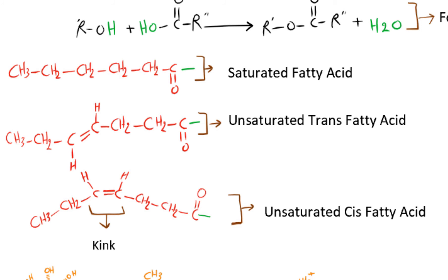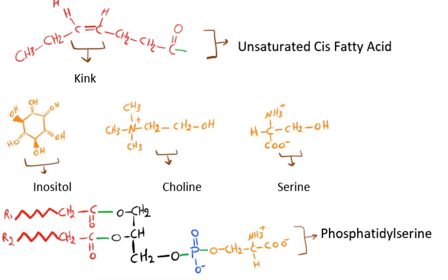In the case of having one double bond, it is called a monounsaturated fatty acid. If there are more than one double bonds, then it is called a polyunsaturated fatty acid.